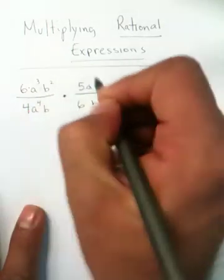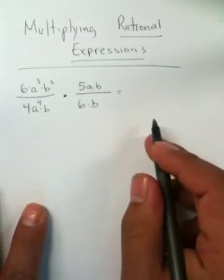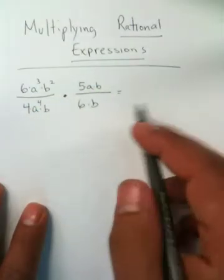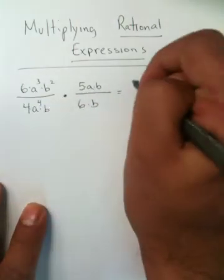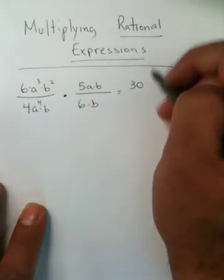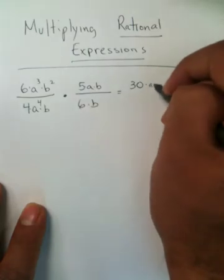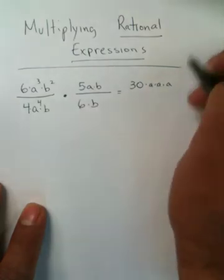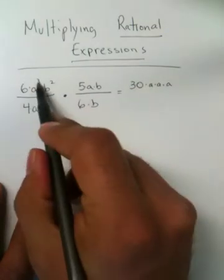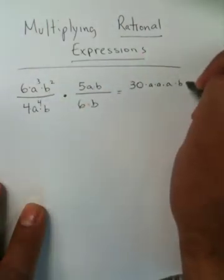All of this is multiplication, as you can clearly see — multiply, multiply, multiply, multiply. What makes this problem really easy is I'm going to take 6 times 5 and get 30. Then I'm going to say times A times A times A, because there are three A's. Times B times B.